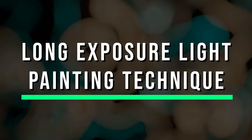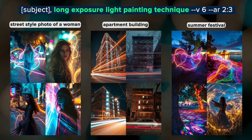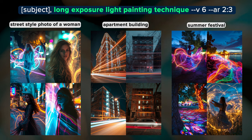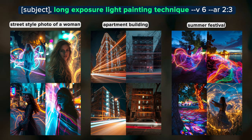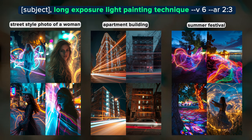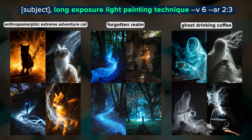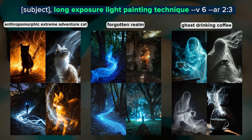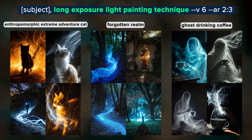Long exposure light painting involves leaving the camera shutter open for several seconds — sometimes minutes. During this time the photographer uses light sources such as flashlights or LEDs to paint or draw in the frame, resulting in abstract luminous trails and shapes. You'll notice it's nighttime in all of these images because long exposure light painting is typically done in the dark. Our cat just wants to be a normal cat this time, except for the lower left where we don't get a cat at all. There are some nice ethereal light trails in our forgotten realm, and our ghosts look like they're made up of smoky glowing light trails.